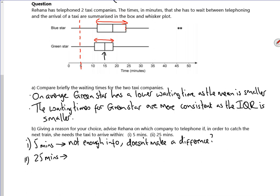Let's have a look at 25 minutes. So at 25 minutes, if you look, for the Blue Star, 75%, because it's at the upper quartile, 75% of their waiting times are below 25 minutes. Whereas if you look at the Green Star, it's much more because their 75% is around probably 18, 19 minutes.